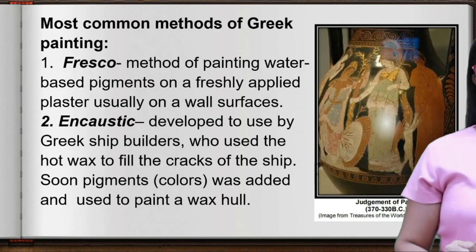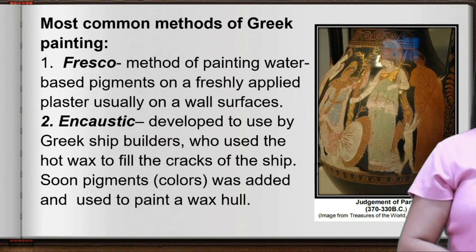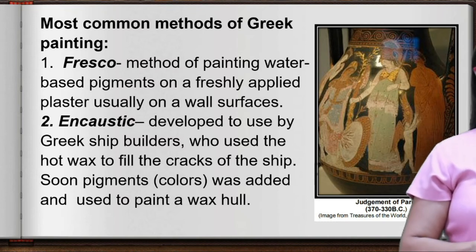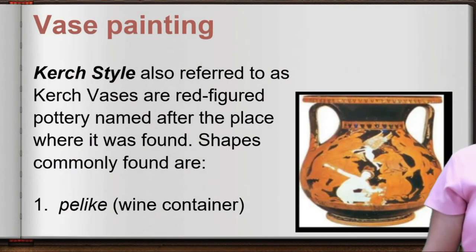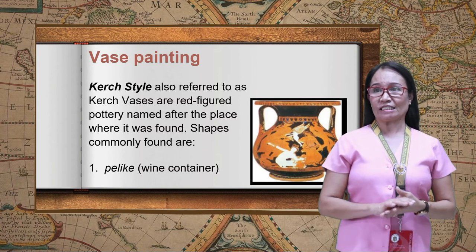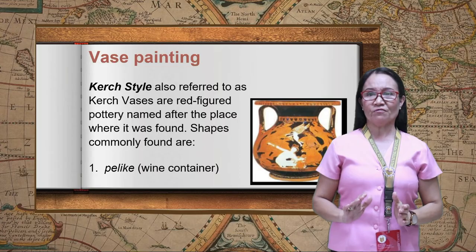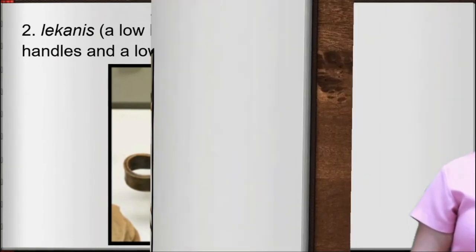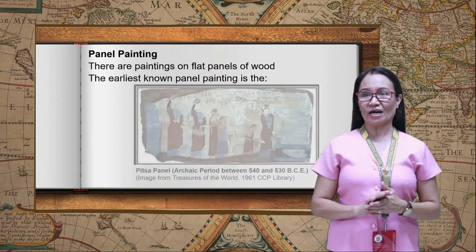The most common methods of Greek painting include: First, the fresco method — painting with water-based pigments on freshly applied plaster, usually on wall surfaces. Second, encaustic — developed by Greek shipbuilders who used hot wax to fill cracks in ships; pigments were then added and used to paint on the wax surface. Third, vase painting — including the Corinthian style, a red-figured pottery named after the place where it was found. Common vase shapes include the pelike, lekane, lekythos gamikos, and krater. Fourth, panel painting — paintings on flat panels of wood, either a single piece or several panels joined together; most no longer exist due to their organic composition.